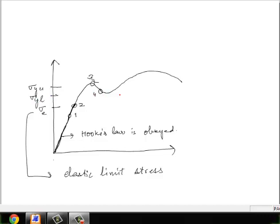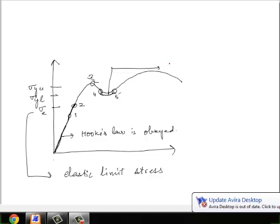After point 4 the specimen elongates by a considerable amount without any increase in stress and this happens up to point 5. The portion from point 4 to 5 is called as yielding of material.